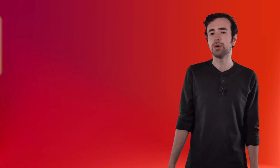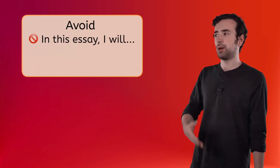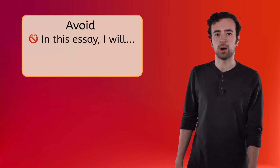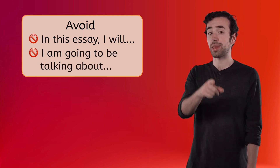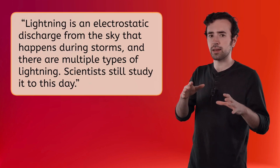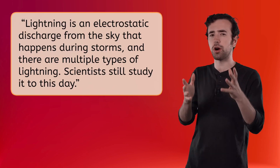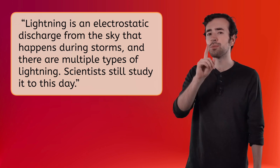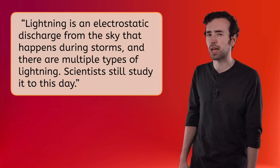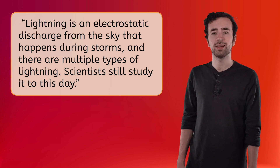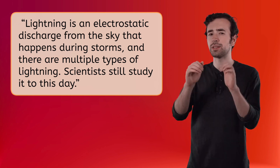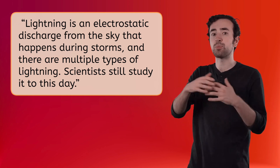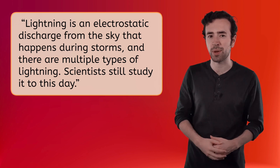This part should be quick and interesting so that your readers want to keep reading your essay. Remember, we're not simply announcing our plans. We don't want to say: in this essay I will explain lightning, or I am going to be talking about lightning. Instead, for my lightning essay, I think I'll write something like: lightning is an electrostatic discharge from the sky that happens during storms, and there are multiple types of lightning. Scientists still study it to this day. These two sentences work as background knowledge because they briefly describe what lightning is without going into too much detail. It acts as a bridge as I transition into the final part of the paragraph.